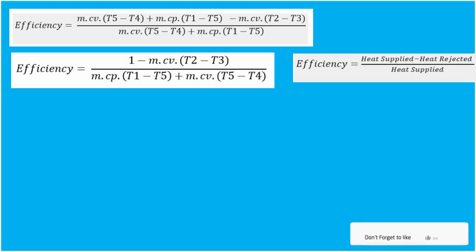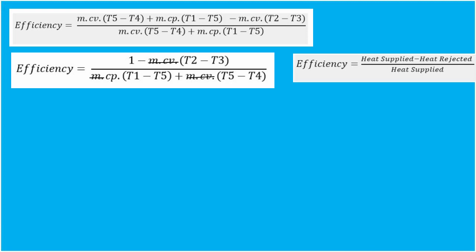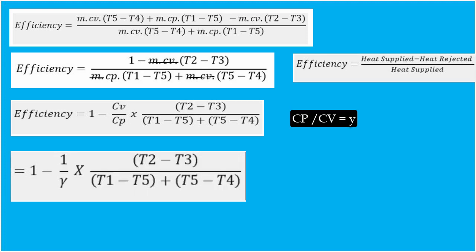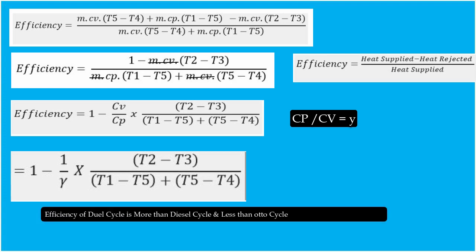Since m is common in numerator and denominator, it cancels out. The formula becomes: η = 1 − Cv/Cp × (T2 − T3) / [(T1 − T5) + (T5 − T4)]. Since γ = Cp/Cv, we have Cv/Cp = 1/γ. Therefore: η = 1 − (1/γ) × (T2 − T3) / [(T1 − T5) + (T5 − T4)]. The efficiency of the dual cycle is more than that of the Diesel cycle but less than that of the Otto cycle for the same compression ratio.